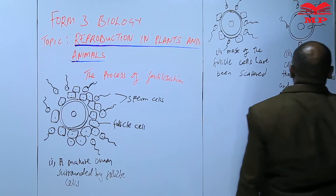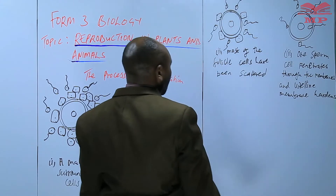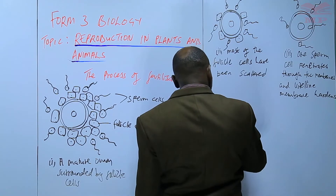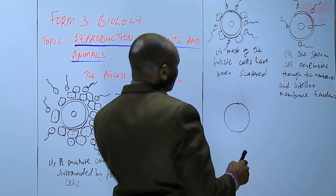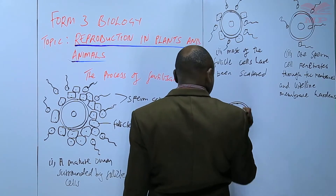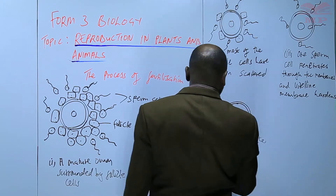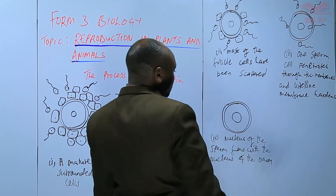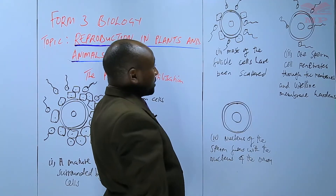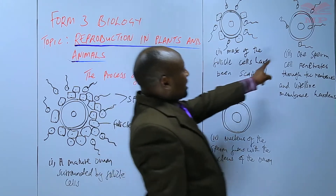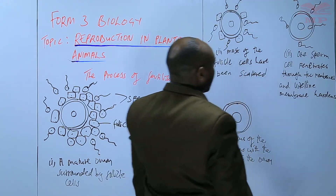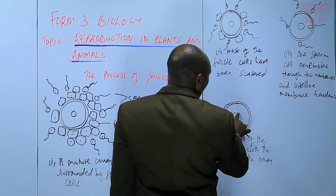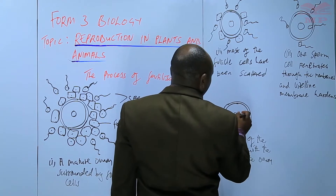The outer membrane is the vitelline membrane. And then finally, the nucleus of the sperm cell, after it has penetrated, fuses with the nucleus of the ovum.